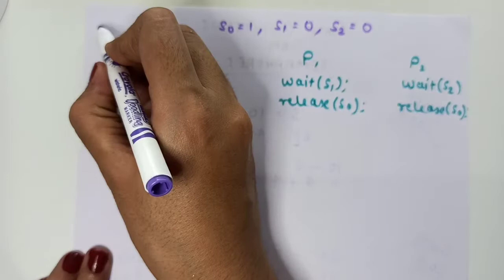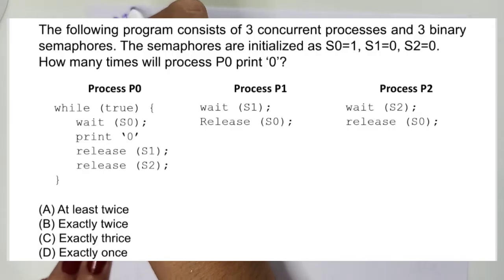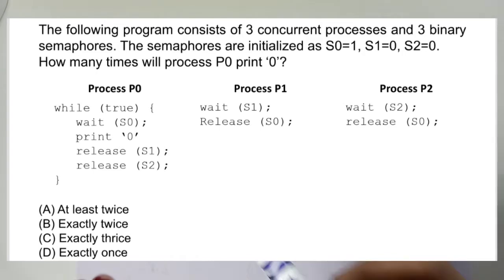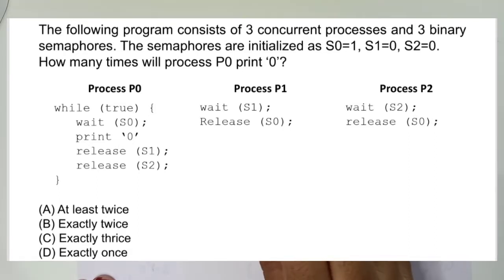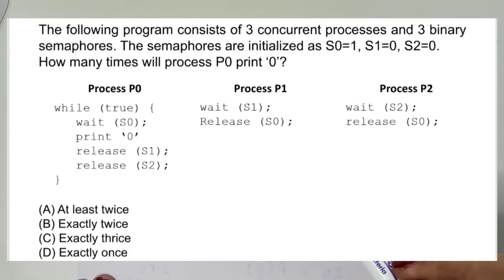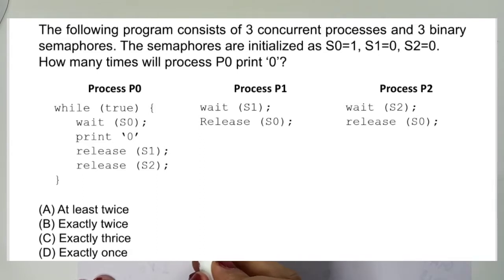The next question has been asked in GATE 2010. The question is: the following program consists of three concurrent processes P0, P1, and P2, and three binary semaphores S0, S1, S2, initialized as S0=1, S1=0, S2=0. The codes of processes P0, P1, and P2 have been given, and the question asks how many times will it print 0?